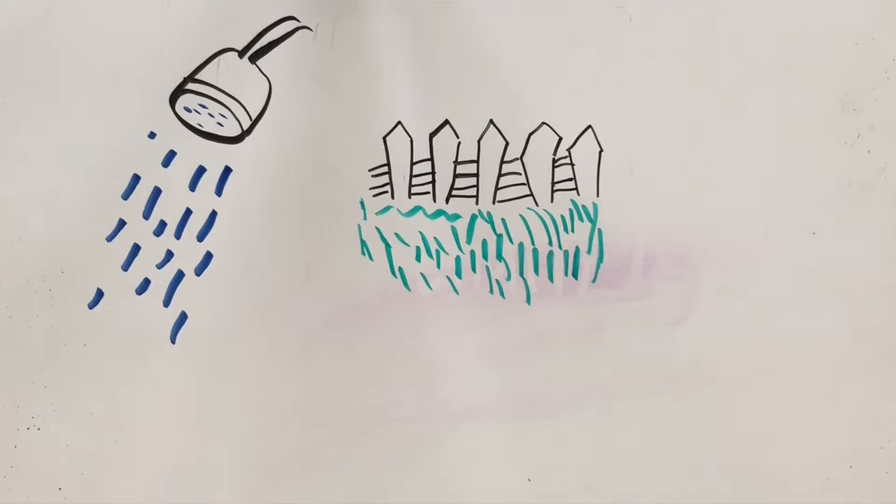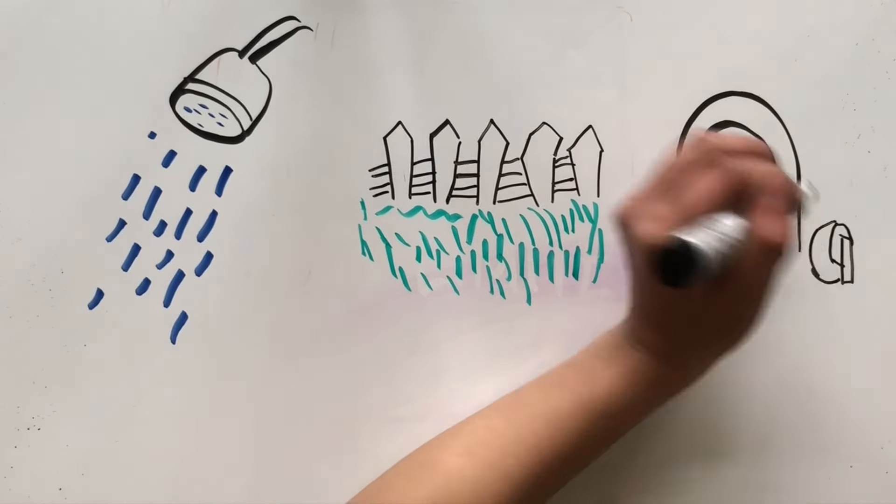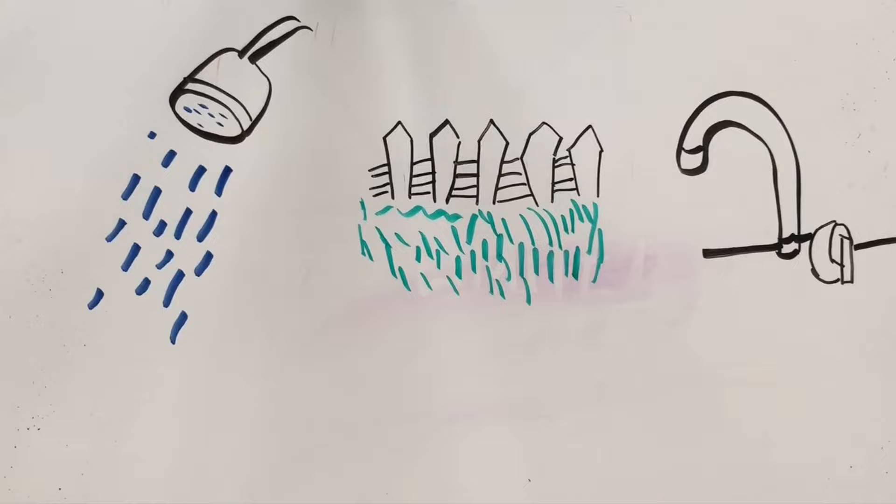Also, on average, 10 gallons of water is lost each day to leaks. So by fixing your leaky faucets or shower heads, you can conserve more.